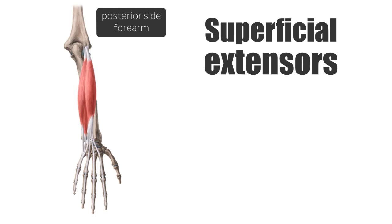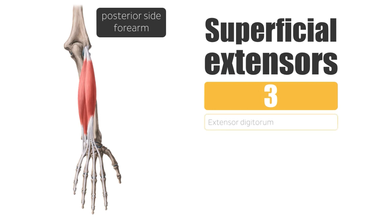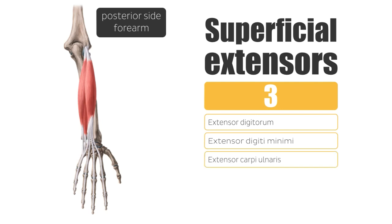This is a group of three muscles we're going to be covering throughout this tutorial. The first one is the extensor digitorum. The second one is the extensor digiti minimi — an interesting and funny name. And the third one is the extensor carpi ulnaris. So these are the three muscles we're going to be covering.